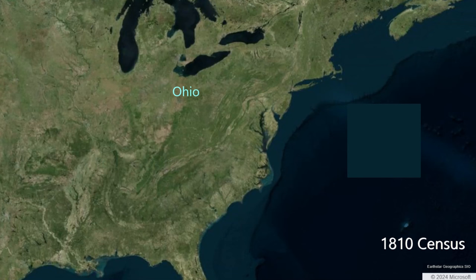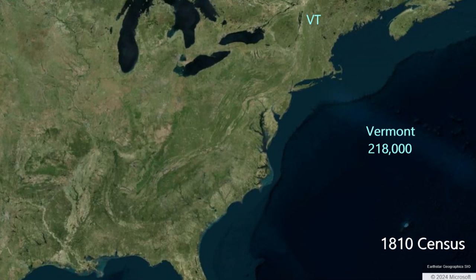The new state of Ohio, just seven years after her founding in 1803, has 231,000 souls in 1810. This illustrates how fast a new western state fills up in the 19th century. Vermont claims 218,000 residents in 1810. The two smallest states are Rhode Island with 77,000 souls, just larger than Delaware with 73,000.